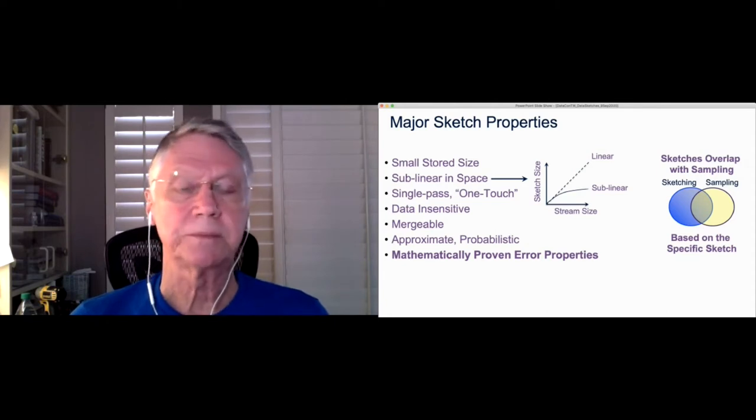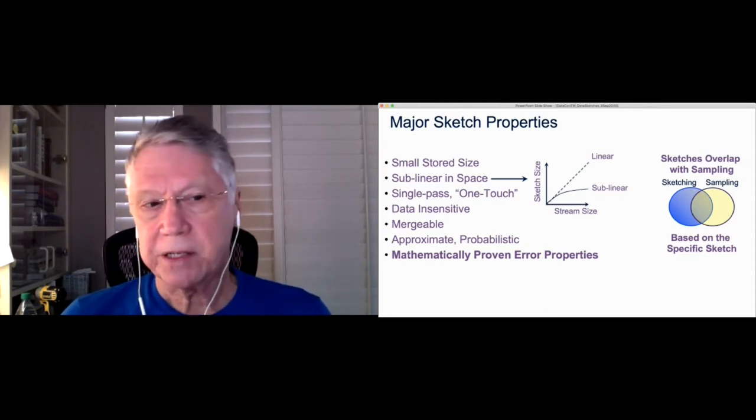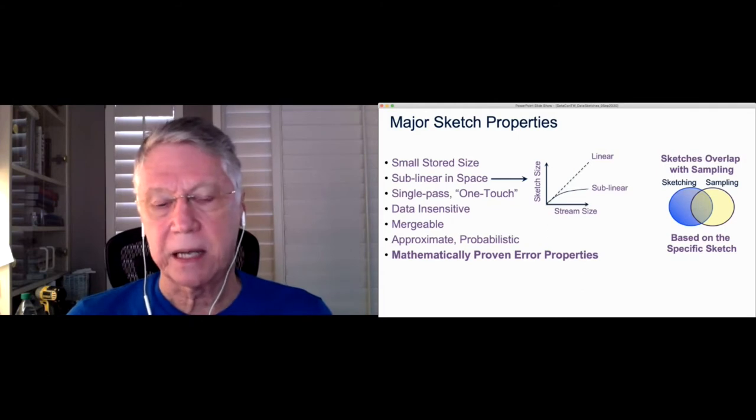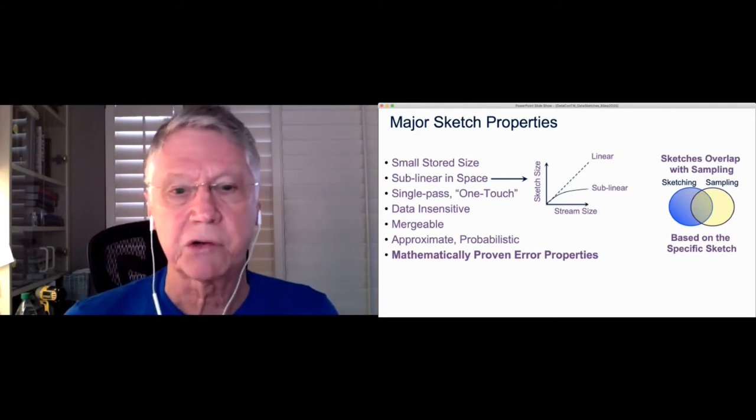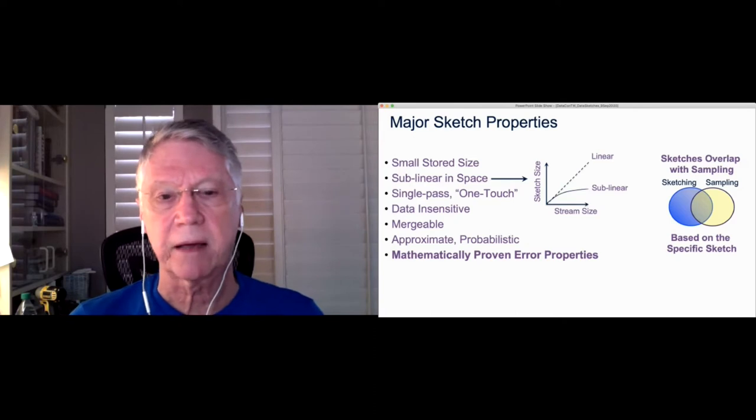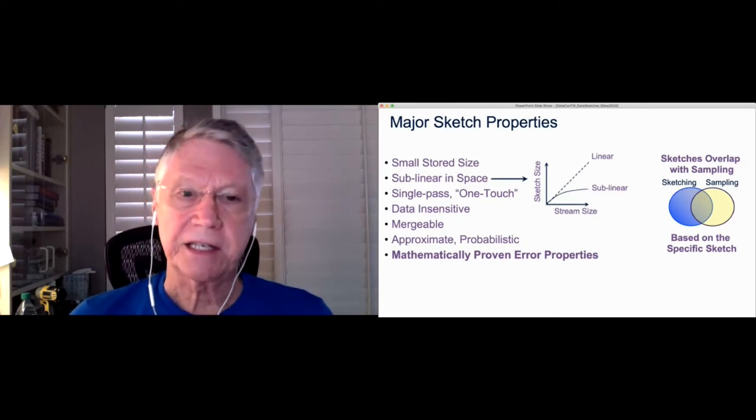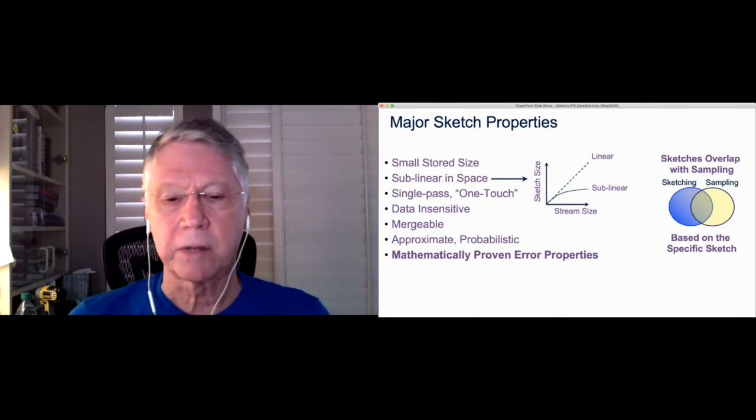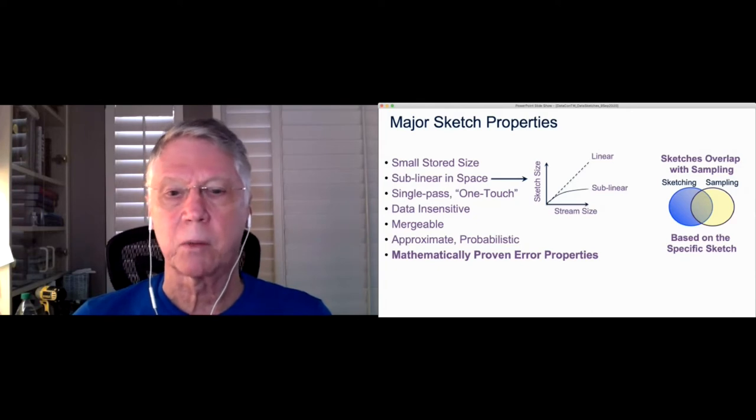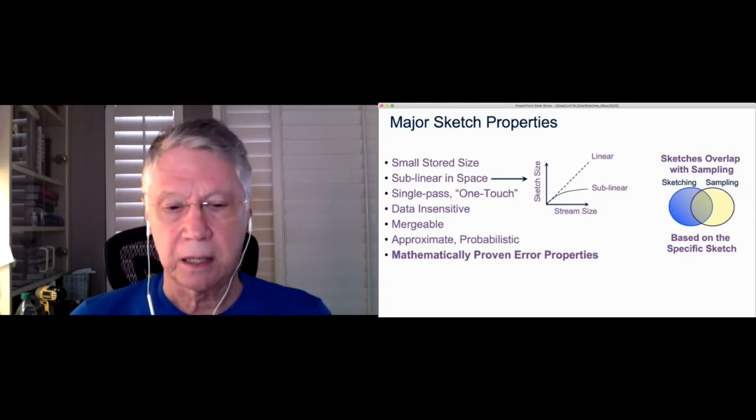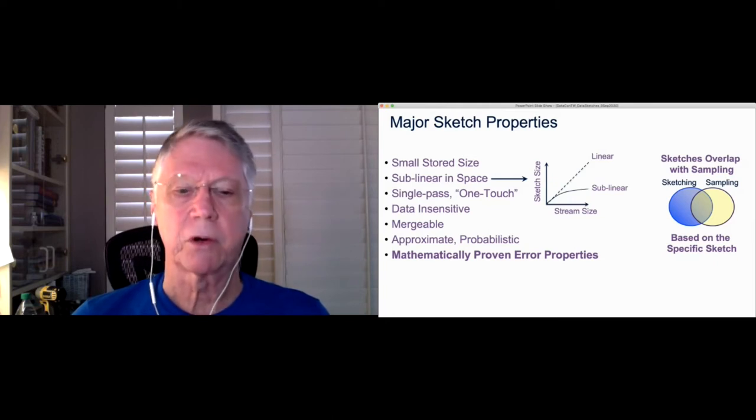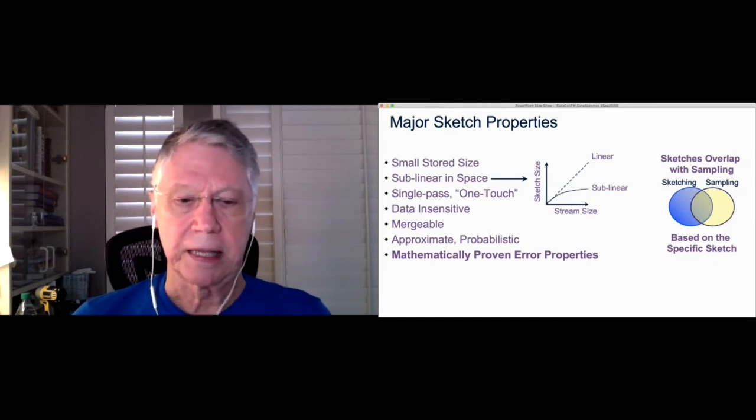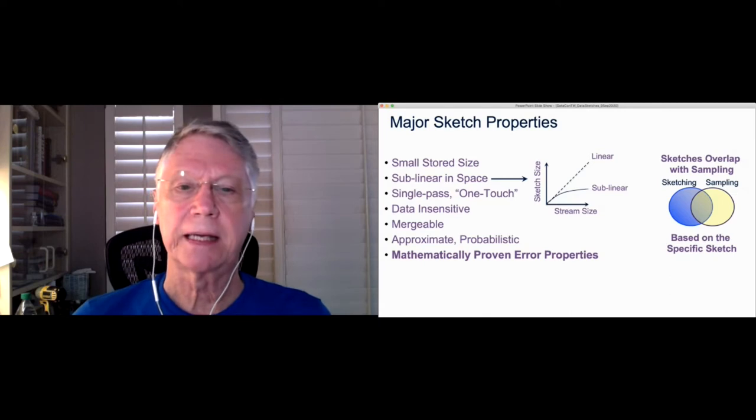The other key property is that they're sublinear in space. And what that means is that as the stream size grows, as shown in this little diagram, that the sketch size does not grow even proportionally. It grows in a sublinear fashion and sometimes even comes to a limit and doesn't grow anymore. So it grows very slowly and is small to start with.